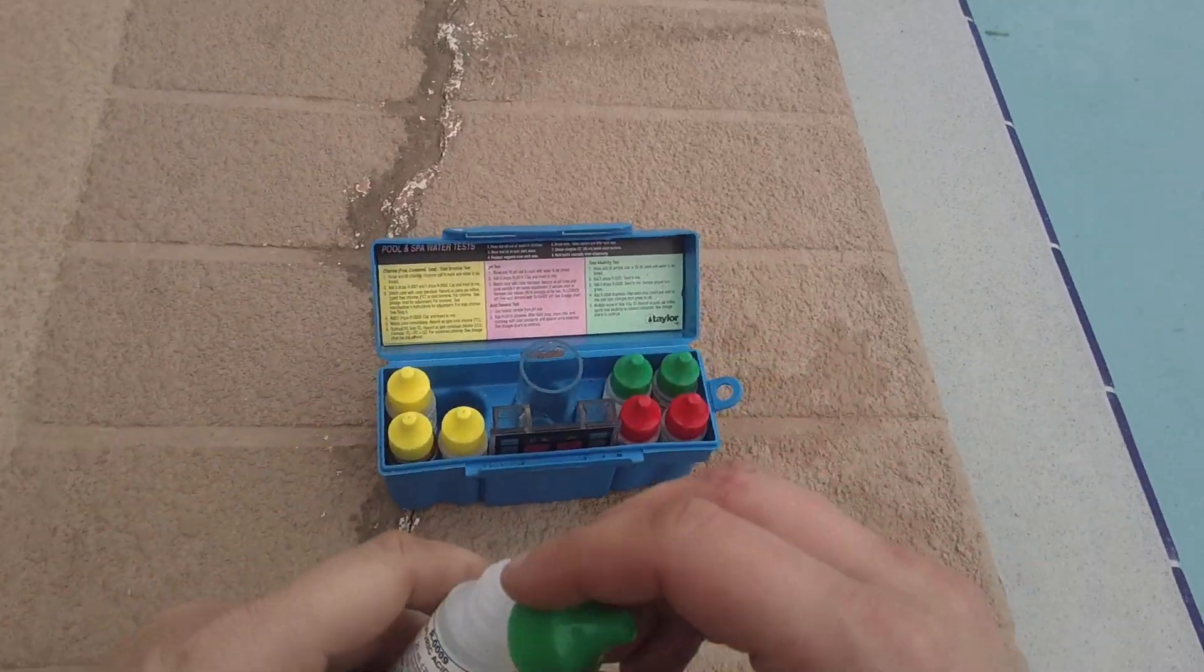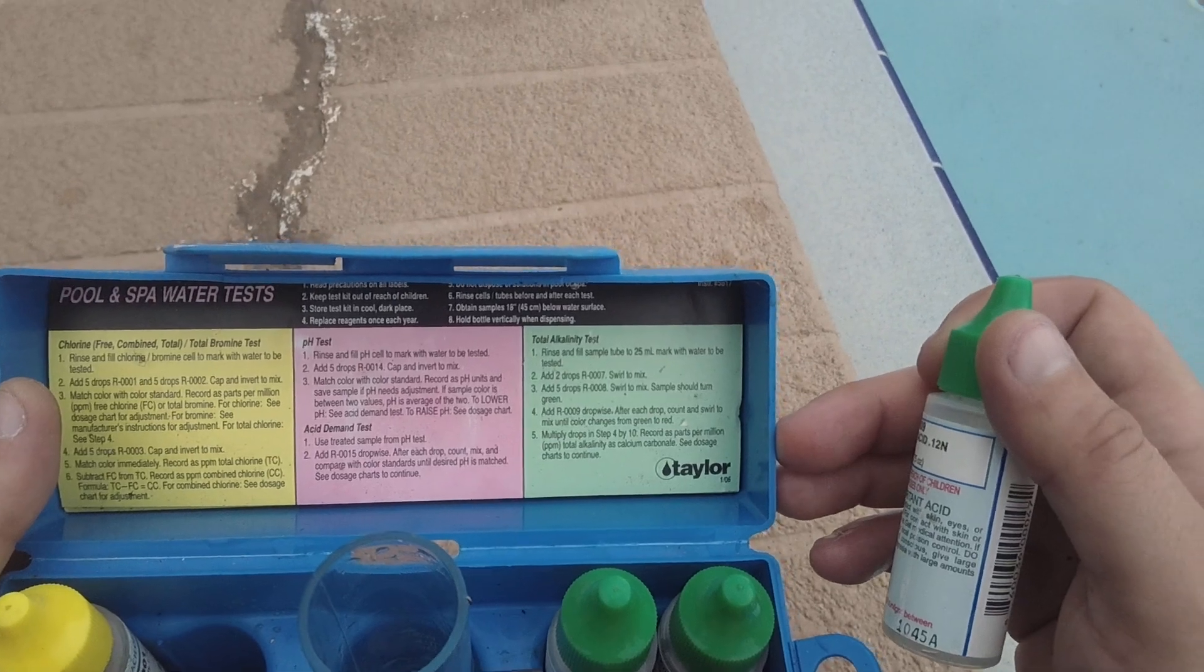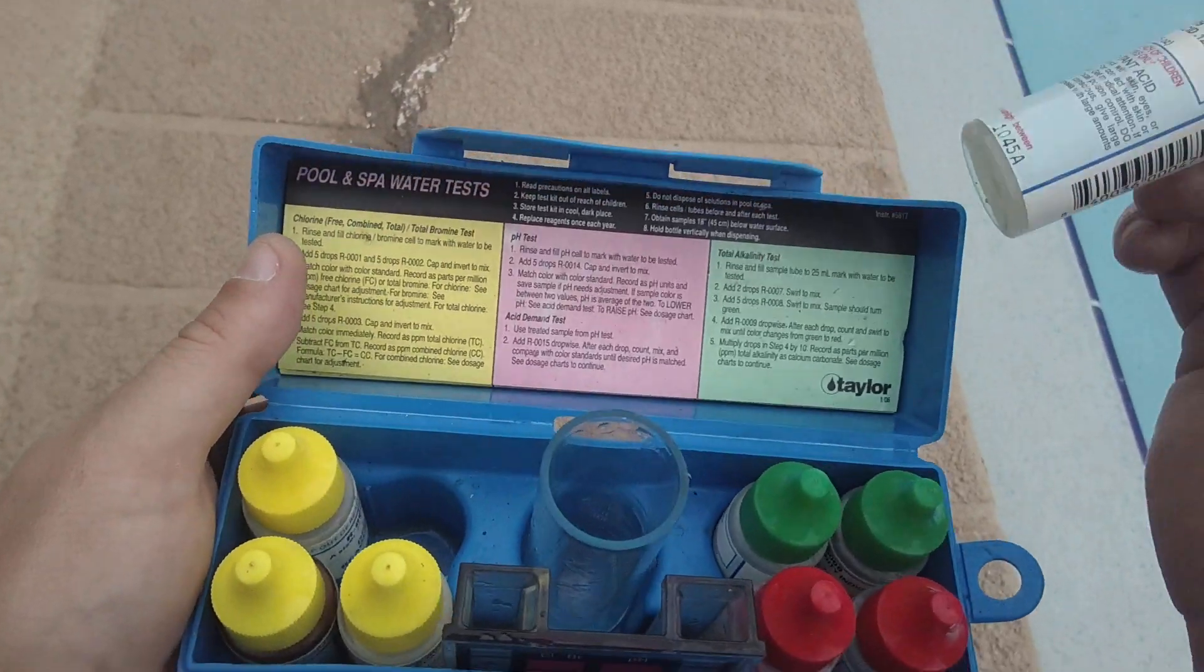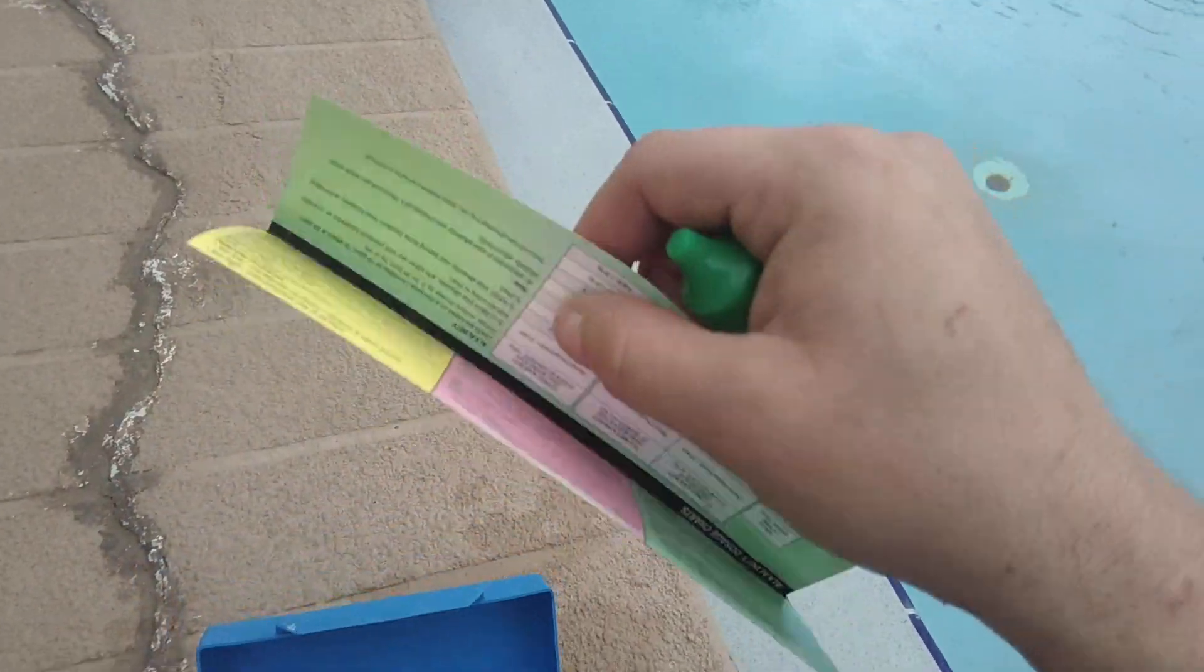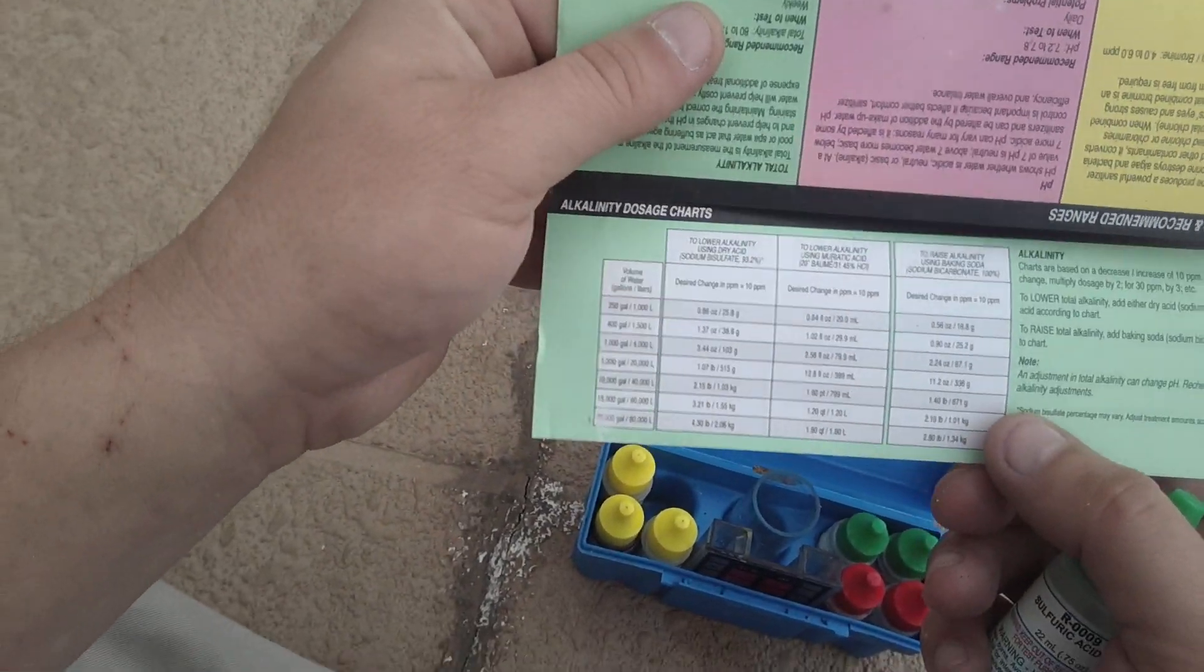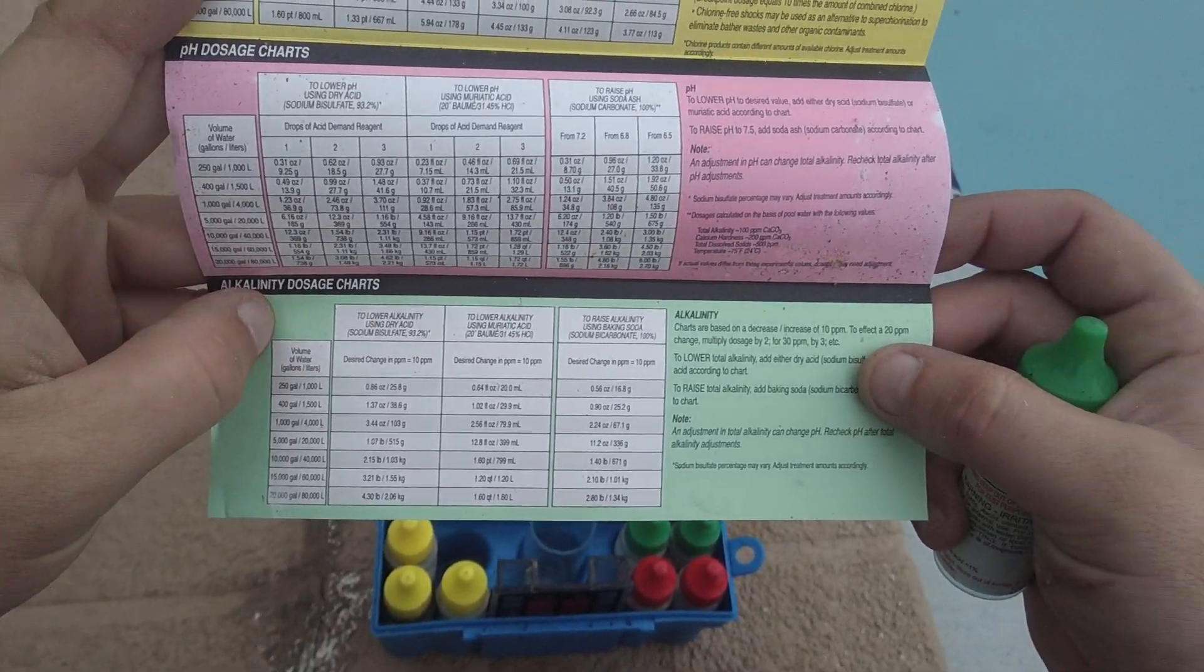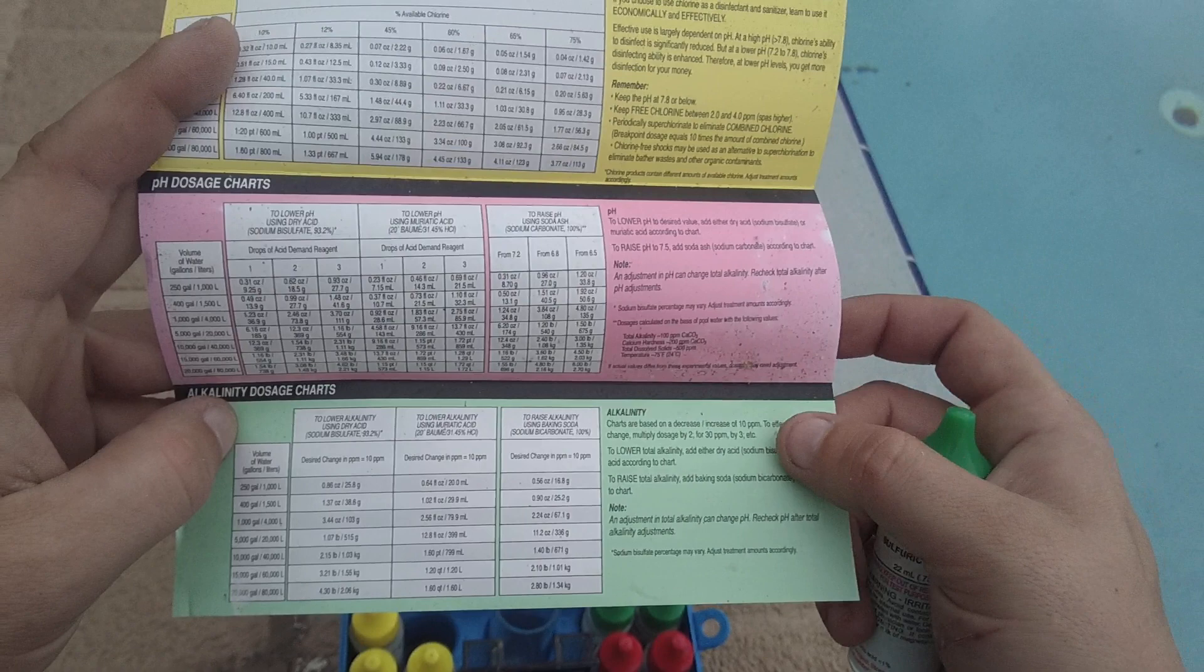So our alkalinity is 90, and you want alkalinity to be between 80 and 100 something - I can't quite remember what it was, but it might tell you in these instructions what it's supposed to be.